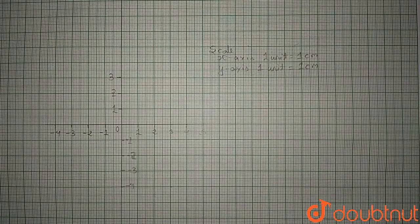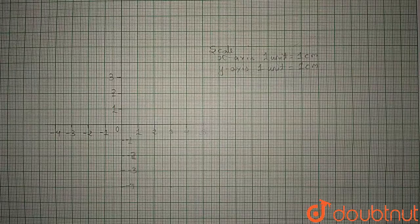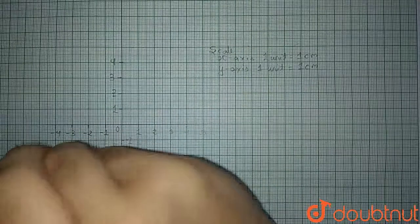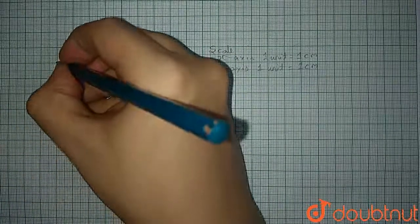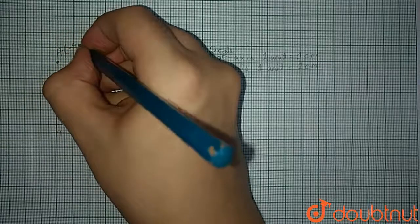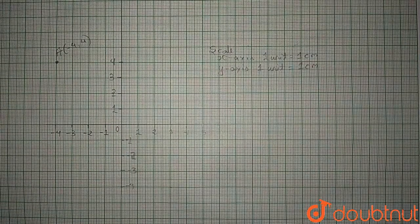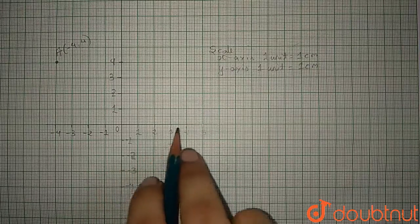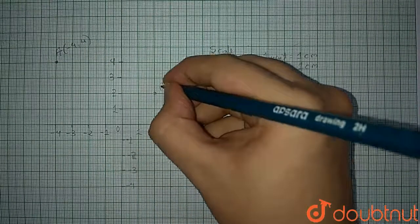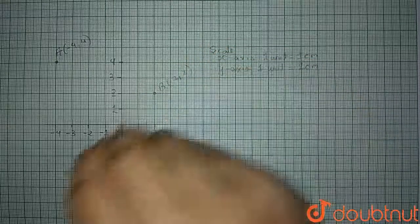Now let's start marking the points. The first point is A, which is (-4, 4) — so it will be right here at (-4, 4). Now let us mark point B, which is at (2, 2) — so B is at (2, 2).